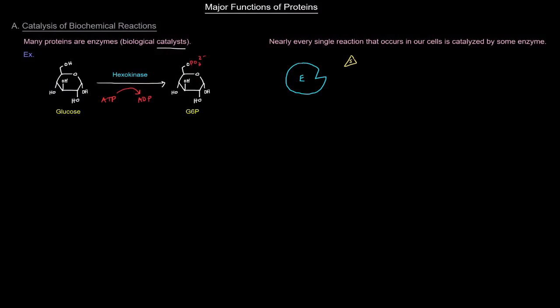And it's worth noting that nearly every single reaction that occurs in our cells is catalyzed by some enzyme. So what happens basically is that you have some substrate binding an enzyme at its active site, that little site there where the substrate binds is called the active site. And then it converts that substrate into a product. That's a very important function of proteins.